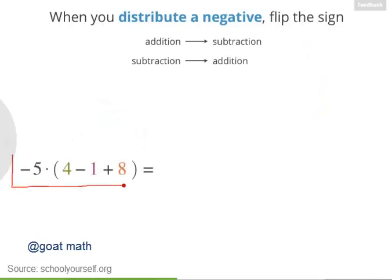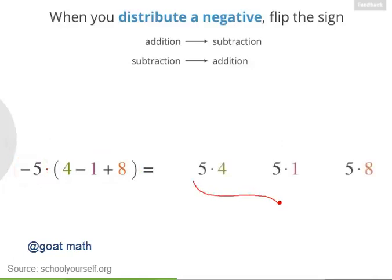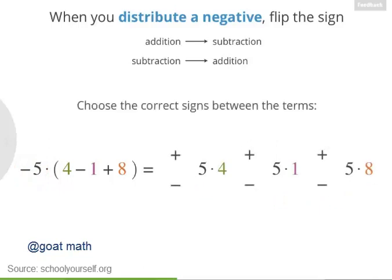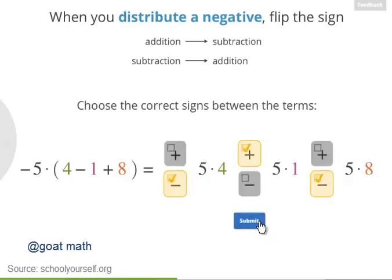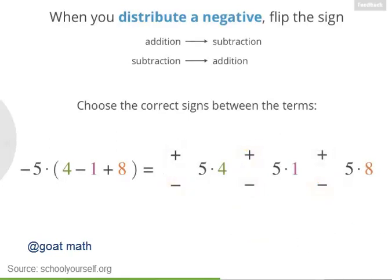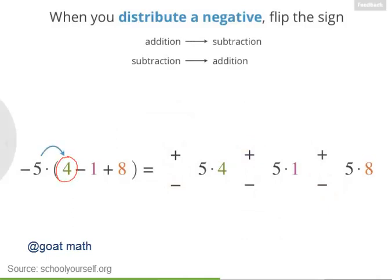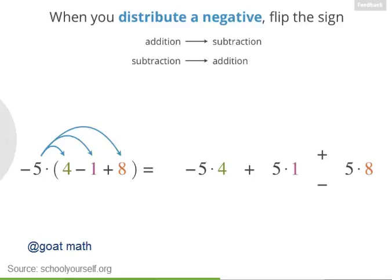Suppose you have negative 5 times 4 minus 1 plus 8 inside parentheses. If you distribute the negative 5, you'll get 3 terms that look like these, with plus or minus signs between them. Distributing negative 5 onto this first term gives you negative 5 times 4. Next, distributing negative 5 onto this subtraction turns it into addition, so you get plus 5 times 1. And this addition over here becomes subtraction, so we have minus 5 times 8.